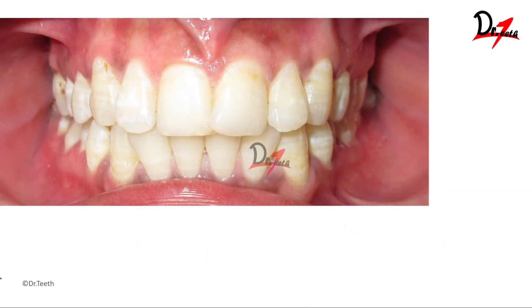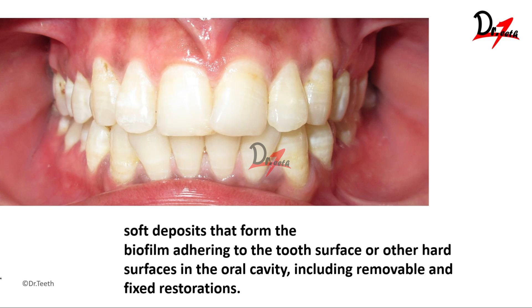So what exactly is dental plaque? It is a soft deposit that forms a biofilm adhering to the tooth surface or other hard surfaces of the oral cavity, including removable and fixed restorations. Breaking this definition down: it is a soft deposit, and if we insert a probe or explorer and scrape the teeth a bit, we can see this layer of plaque. It forms a biofilm adhering to the tooth structure.